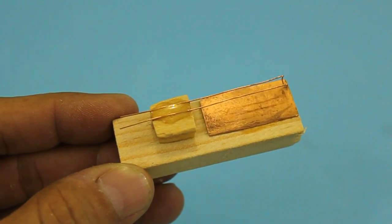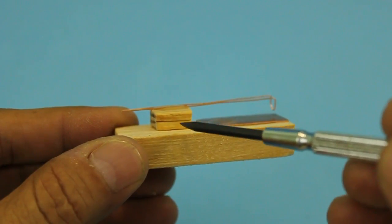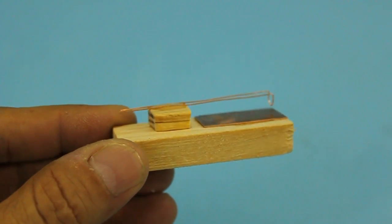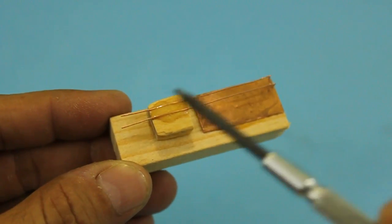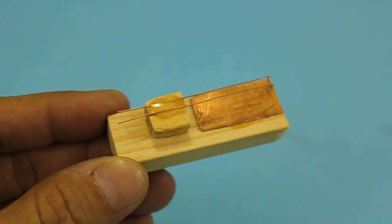The next step is to glue another piece of wood 5 to 6 millimeters in width and on top of it fix the copper wire using epoxy glue.